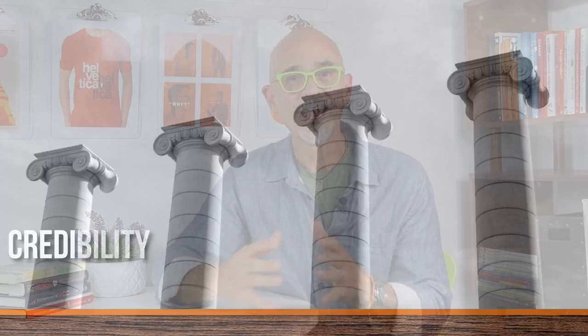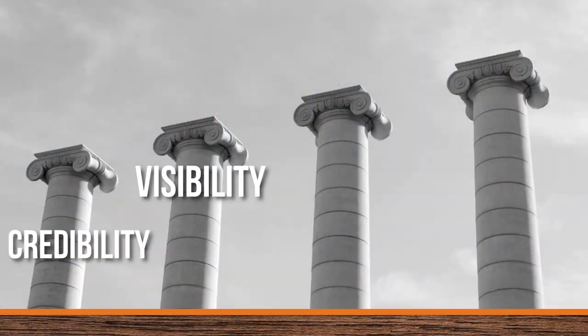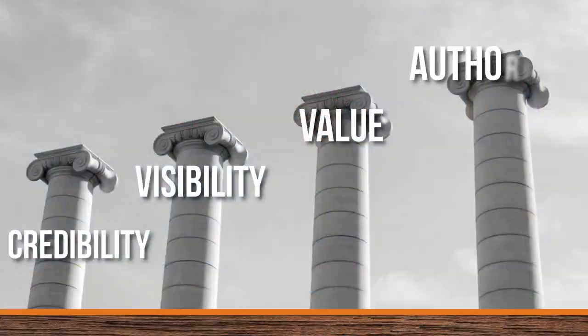Let's do a quick review — the four pillars of building authority online. Number one is increasing credibility: having a point of view and building belief that you have the solution to your audience's problem. Number two is increasing your visibility so you can be found easily and recognized. Number three is delivering value: publishing valuable content consistently and reliably. And finally, building authority through building a following — your proof of authority is your following and the transformations you create.